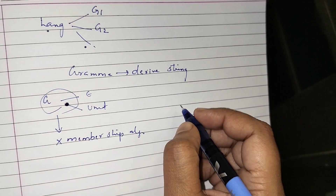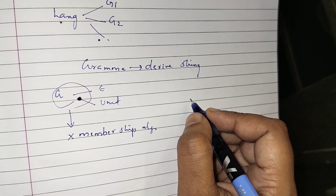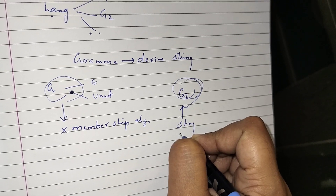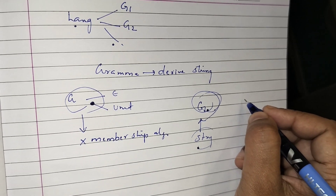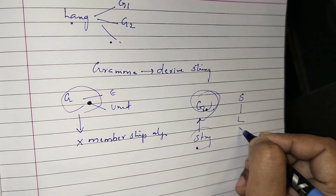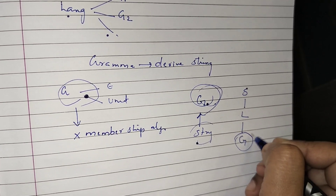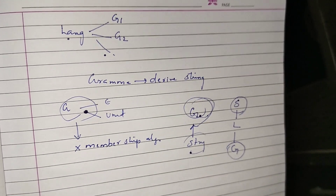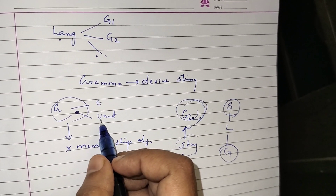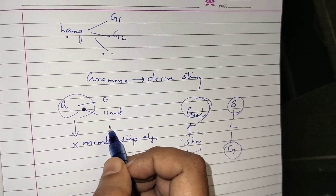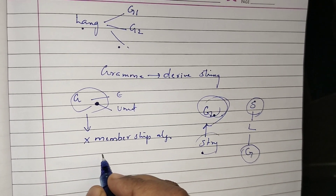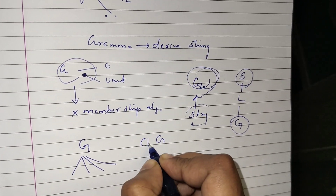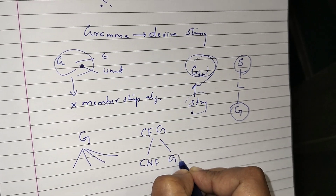The membership algorithm tells whether a given string is a member of a given grammar — that is, whether a particular grammar can generate a particular string. If a grammar has null productions or unit productions, it is not well-suited for the membership algorithm. Every representation of a grammar has some advantages. The main representations of a context-free grammar are Chomsky Normal Form and Greibach Normal Form.